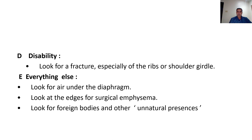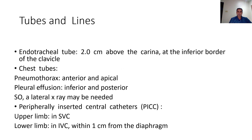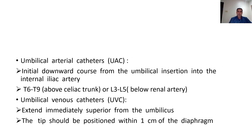After completing the ABCDE system, it's important to look for tubes and lines. The tracheal tube should end two centimeters above the carina and the inferior border of the clavicle. For chest tubes inserted for pneumothorax, they should be anterior and apical; for pleural effusion, they should be inferior and posterior — a lateral X-ray may be needed to confirm position. PICC lines inserted from the upper limb should be in the superior vena cava; if inserted from the lower limb, they should lie in the inferior vena cava within one centimeter from the diaphragm.